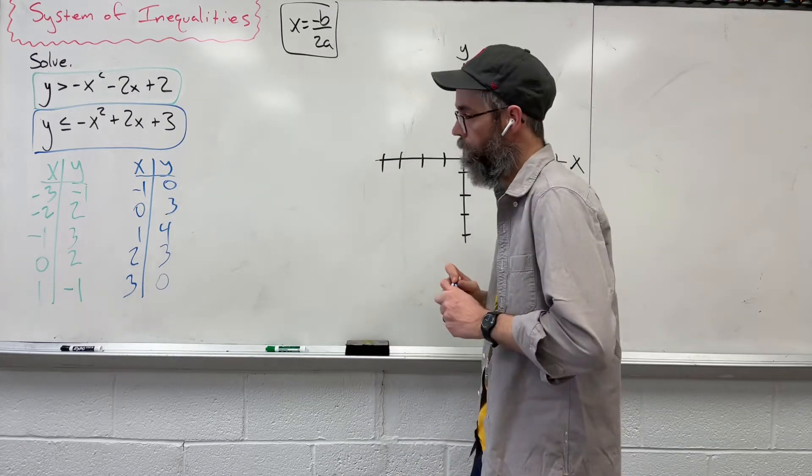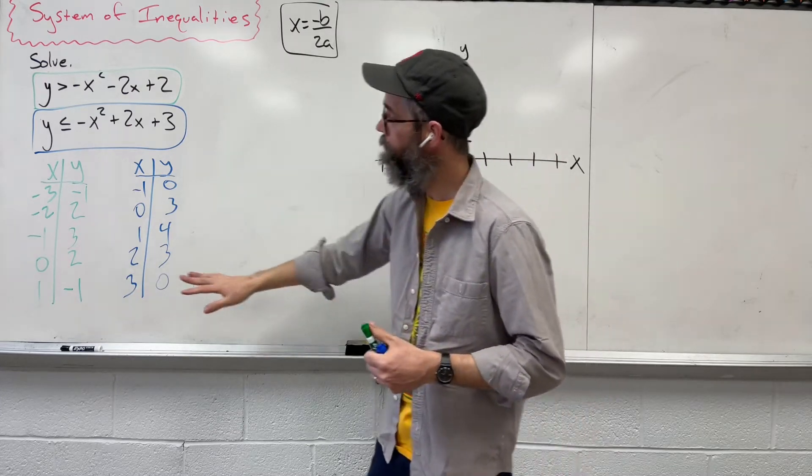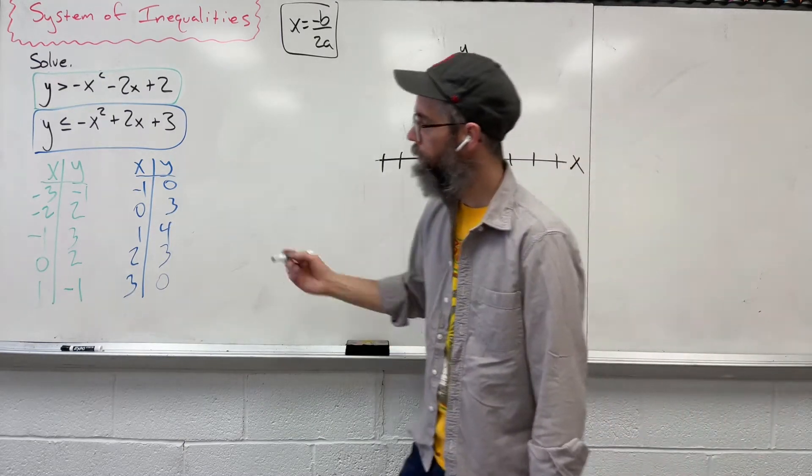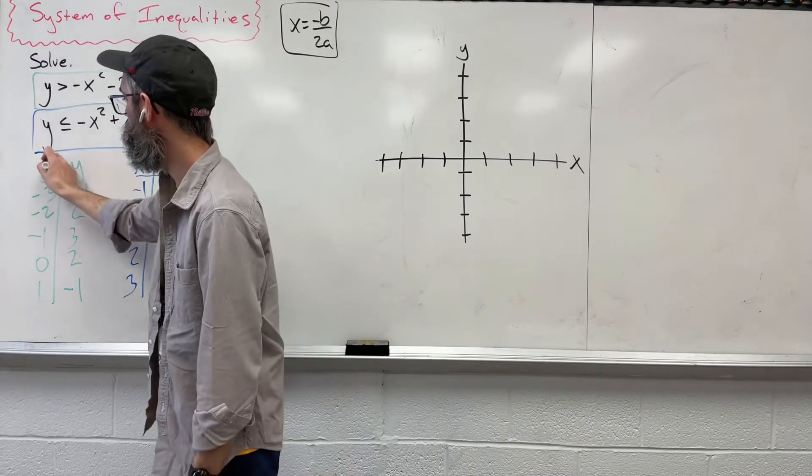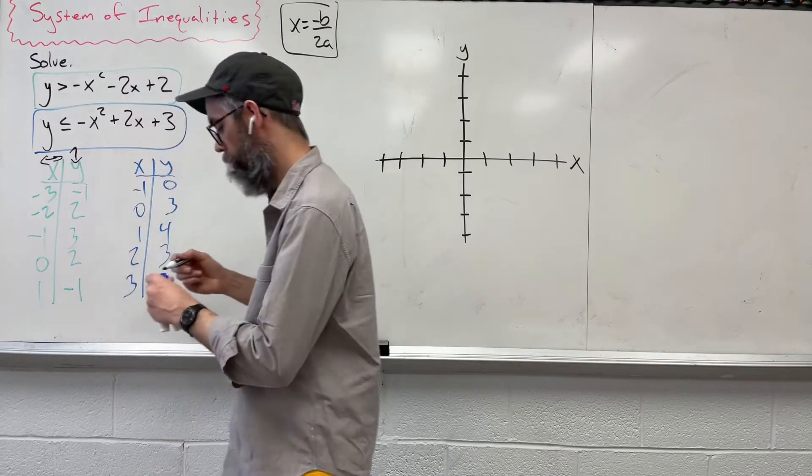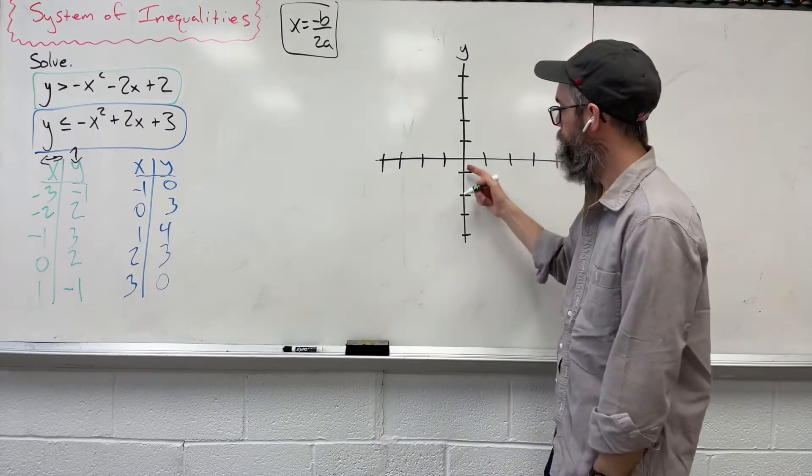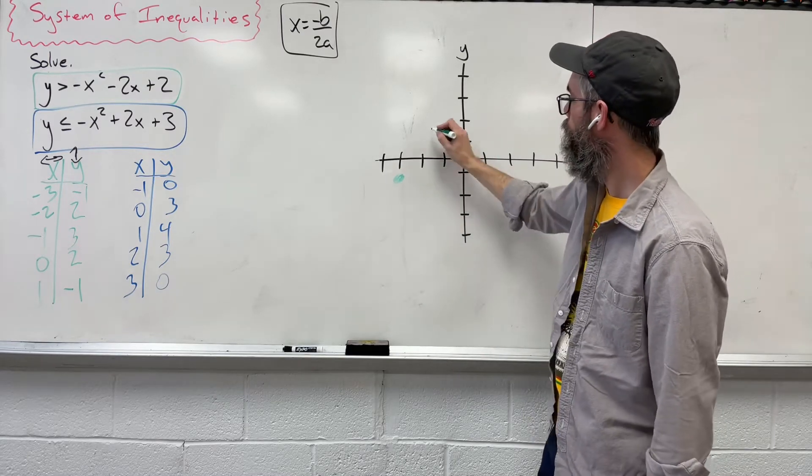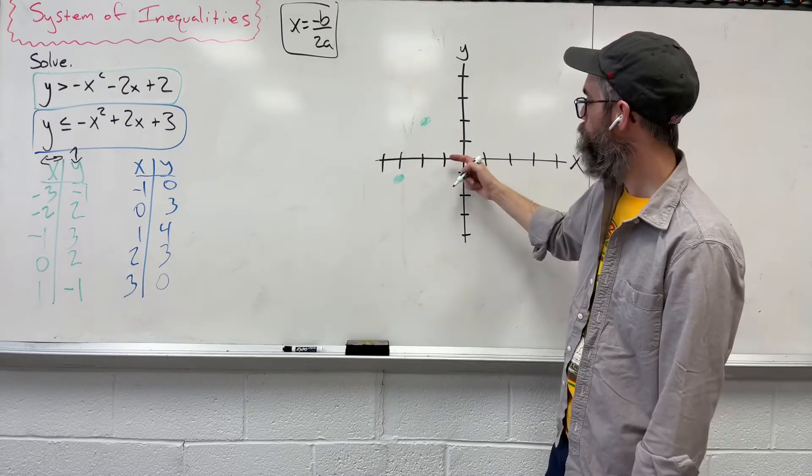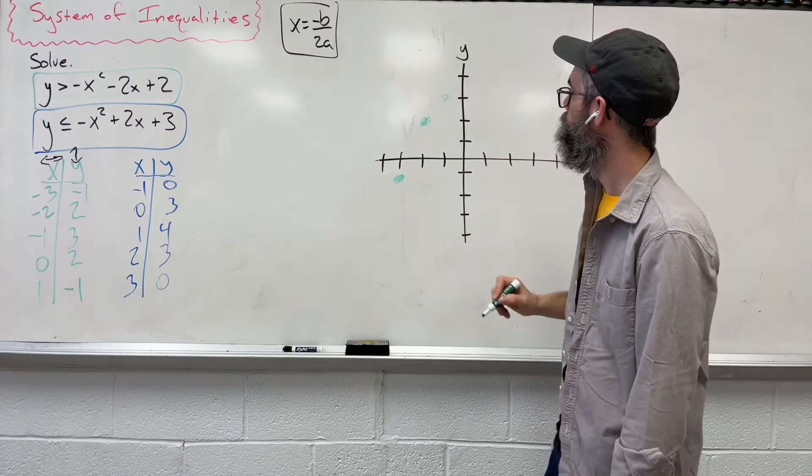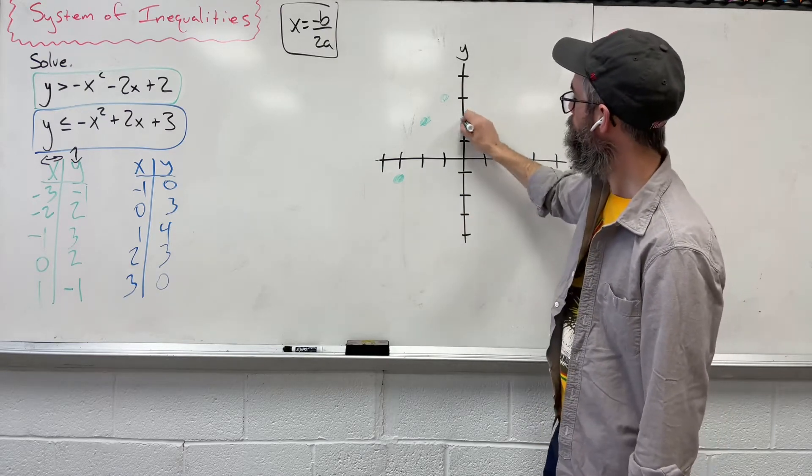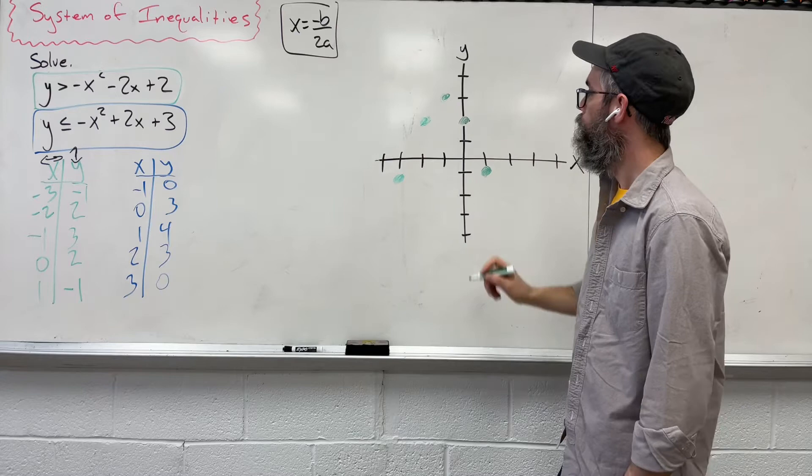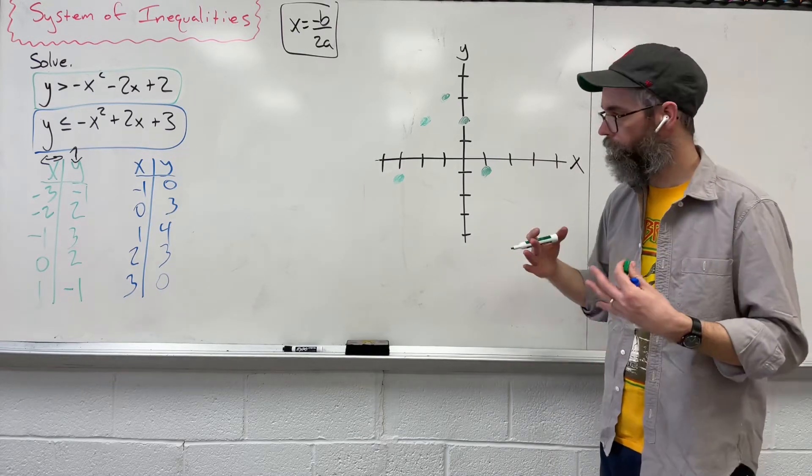Now we need to graph. So going back to the first problem that we did in green, I want to plot all these points. So every time you plot a point, we're moving in the x direction first, which is left and right, and then the y up and down. So let's go backwards 3, let's go down 1. Let's go back 2, up 2. Go back 1, up 3. And then over 0, up 2. And over 1, down 1. All right. So this part is just like a regular quadratic.